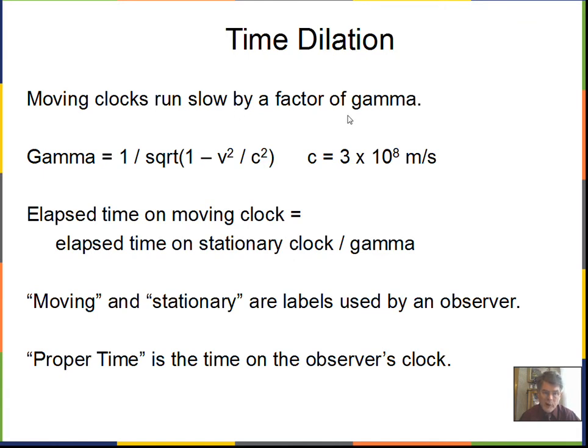This ends up being summarized by the effect called time dilation. Moving clocks run slow by a factor of gamma. Tick-tock, tick-tock, the slow tick-tock in the moving clock. The second hand does not advance as fast, there's going to be less elapsed time on the moving clock. We can calculate how much less by calculating something called gamma. This is a very useful parameter in special relativity. 1 divided by the square root of 1 minus V squared over C squared. V is the speed of the moving object, C is the speed of light. Our elapsed time on the moving clock is the elapsed time on a stationary clock that we're holding divided by gamma.